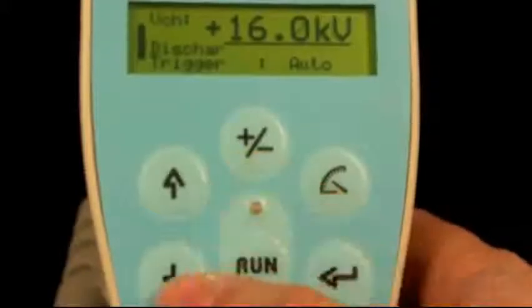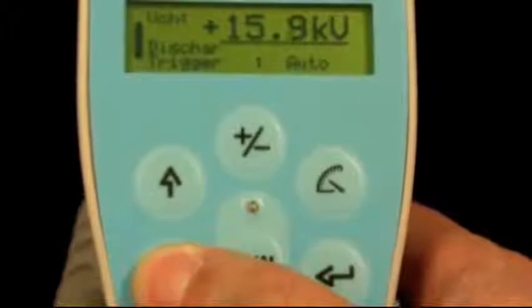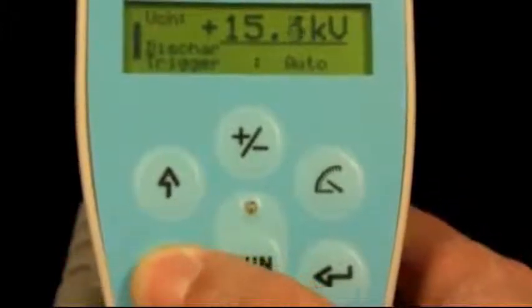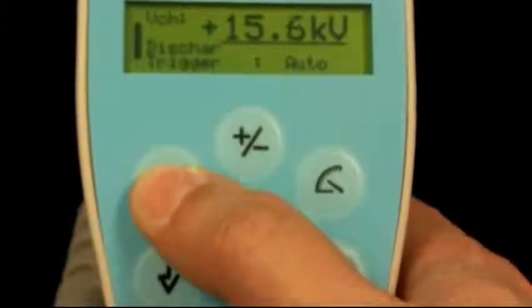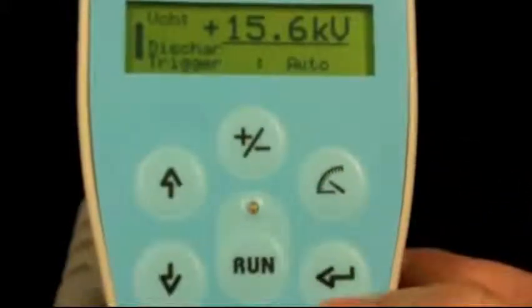If you want to increase or decrease at a lower rate, use the up and down arrow keys. Once you have selected the proper voltage, hit enter.